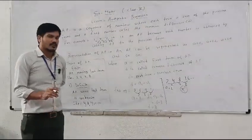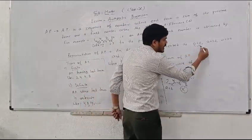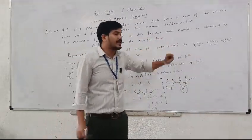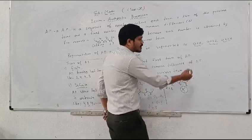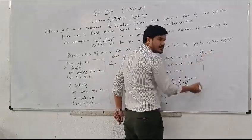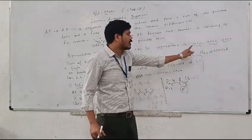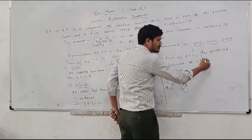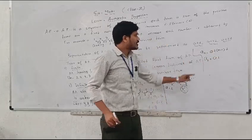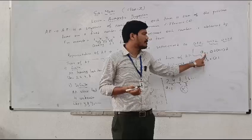How to find the last term of an AP? For example, we have a series A, A plus D, A plus 2D, A plus 3D. Using this series, we can find the last term. The formula is AN equals A plus N minus 1 times D, where A is the first term, N is the number of terms, and D is the common difference.